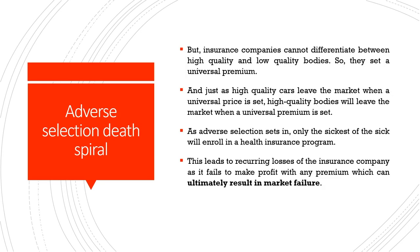Over time, this leads to an adverse selection death spiral. Insurance companies cannot differentiate between high quality and low quality products, so they set a universal premium. Just as high quality cars leave the market when a universal price is set because their costs are not met, high quality bodies will also leave the market when a universal premium is set. When adverse selection sets in, only the sickest of the sick will enroll in a health insurance program, which will not benefit the insurance company in the long run and can ultimately result in market failure.